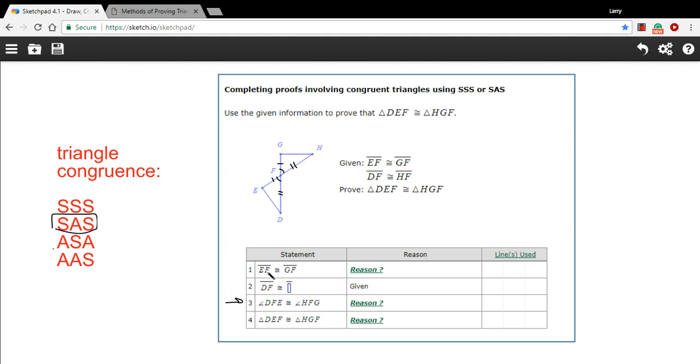So let's look at the proof now and see what we need to fill in. Number one says EF is congruent to GF. What's the reason? Well, that's just given. So that's easy enough to fill in.